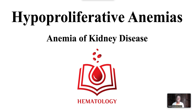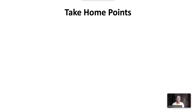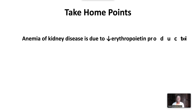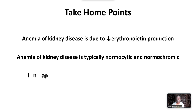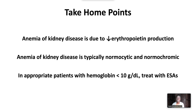Welcome to Hypoproliferative Anemias: Anemia of Kidney Disease. We have the following take-home points. Anemia of kidney disease is due to decreased erythropoietin production. Anemia of kidney disease is typically normocytic and normochromic. In appropriate patients with hemoglobin less than 10, treat with erythropoietin stimulating agents.